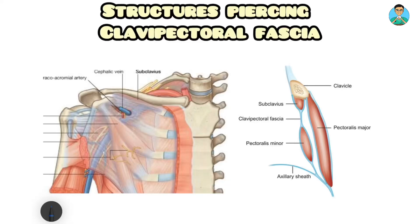Clavipectoral fascia is a fascia which takes its origin from the inferior border of the clavicle. It encloses or covers the subclavius muscle within it and goes and attaches to the fascia of the pectoralis minor muscle.